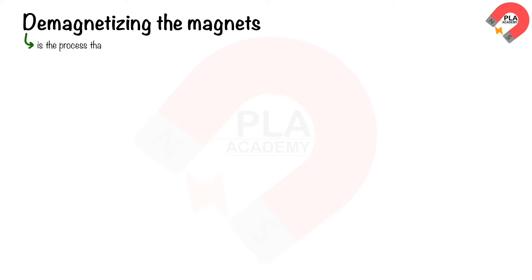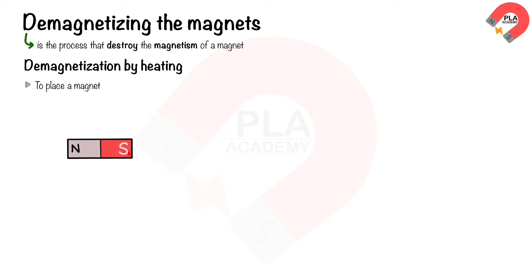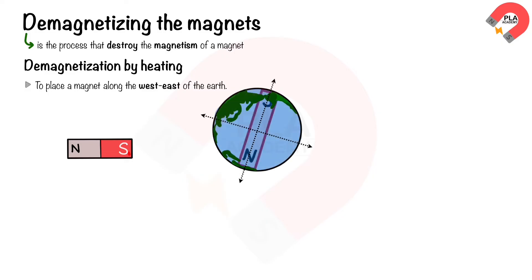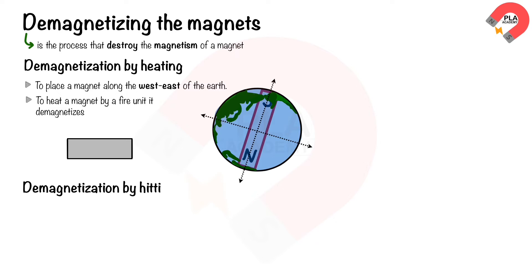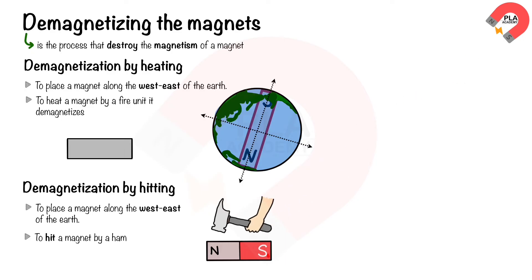Demagnetization is the process that destroys the magnetism of a magnet. There are three ways to demagnetize a magnet. The first is demagnetization by heating. To do this, place the magnet along the west-east direction of the earth, because the earth is a magnet and its poles are along north-south — it is easier to demagnetize when the magnet is aligned west-east. Then heat the magnet or strike it with a hammer with a moderate amount of force until it demagnetizes.